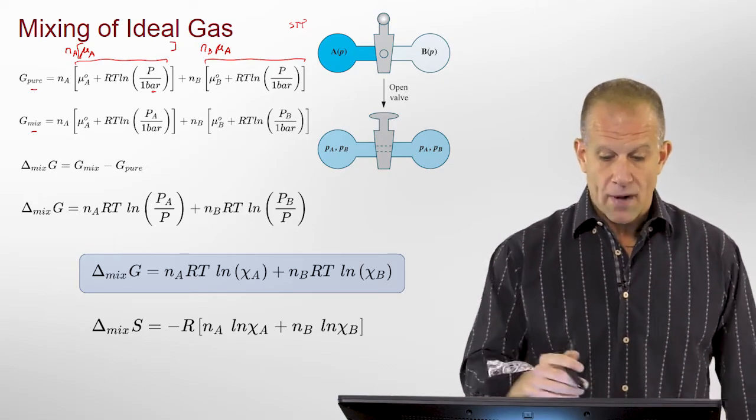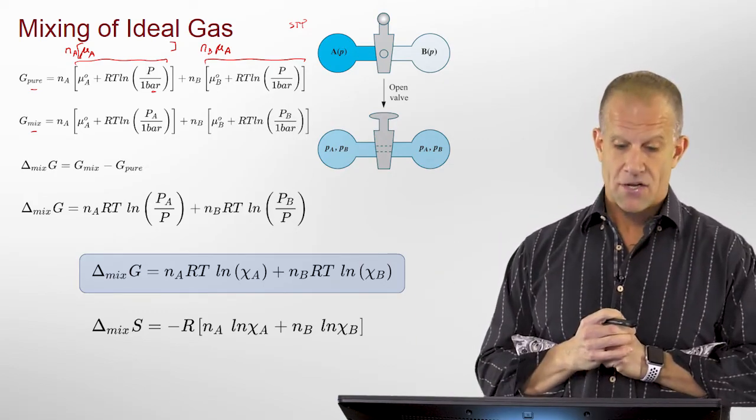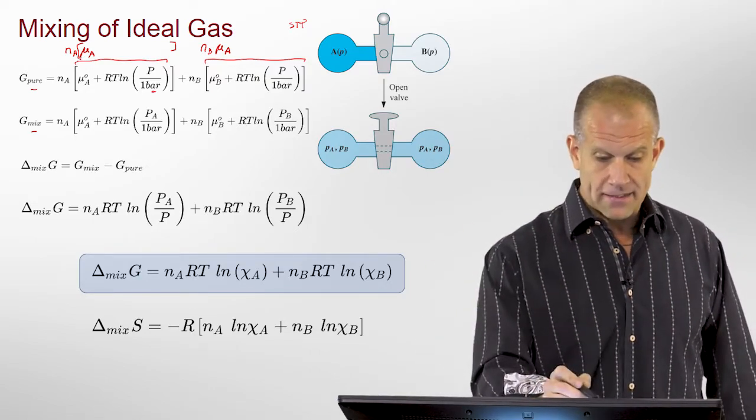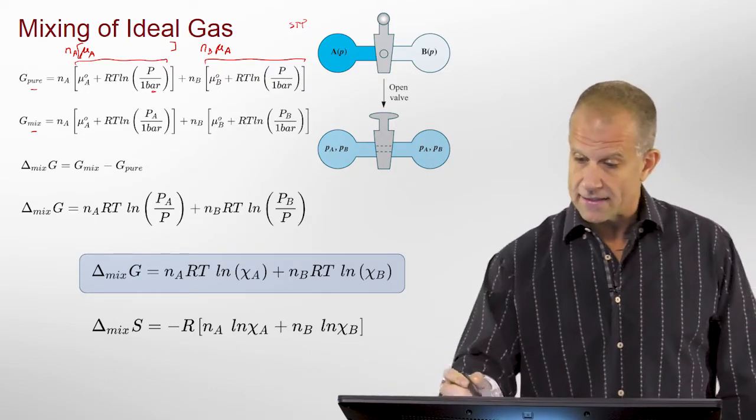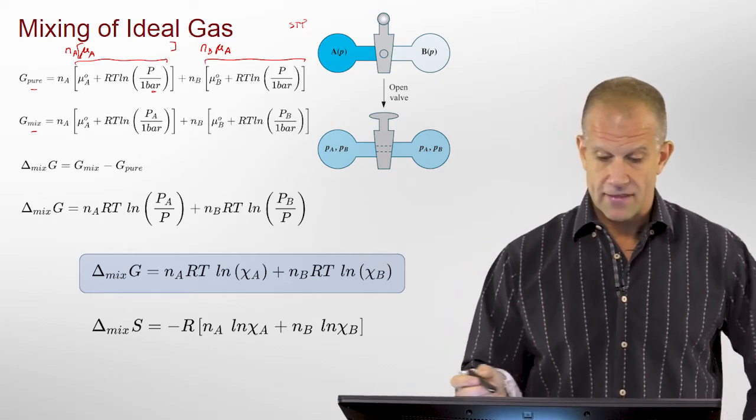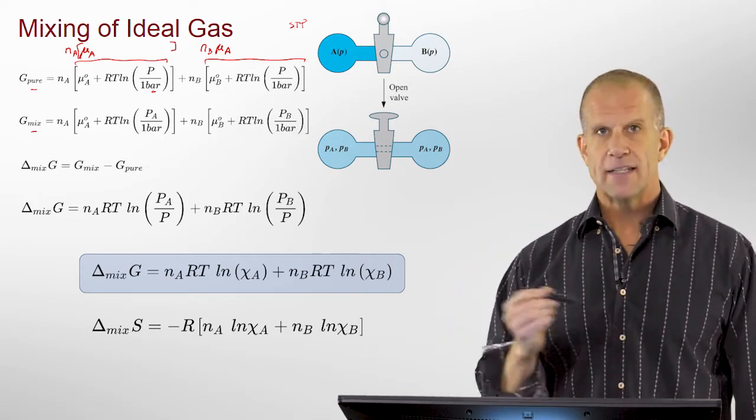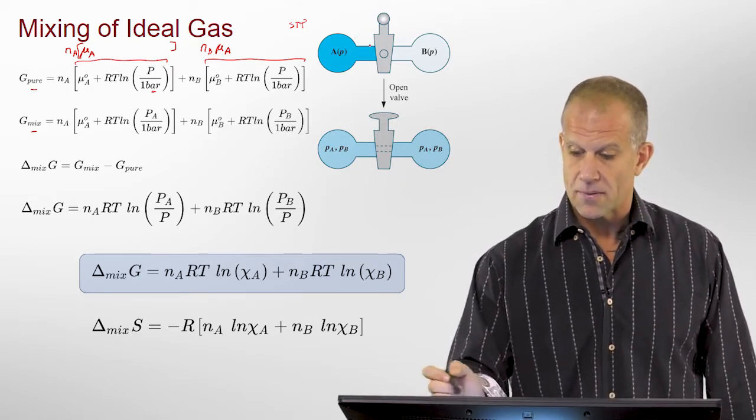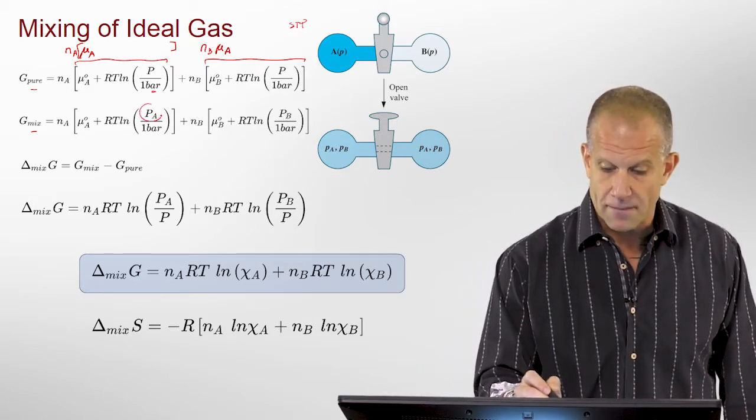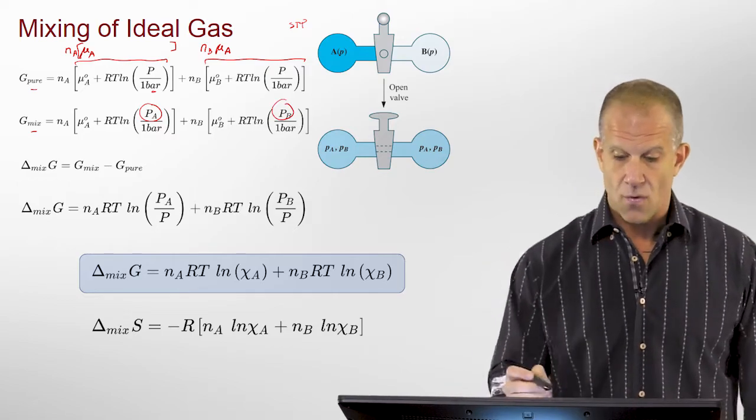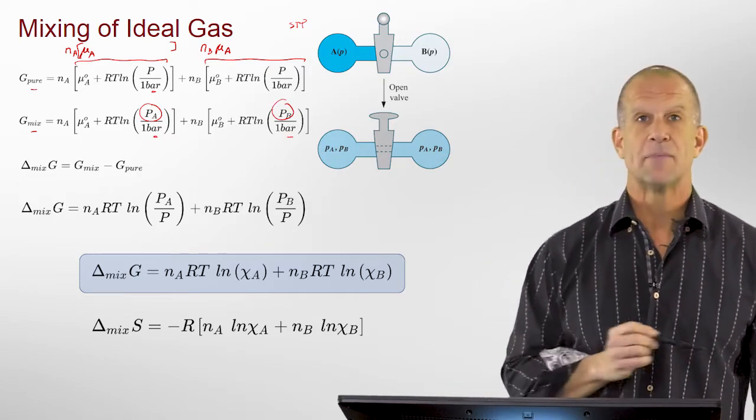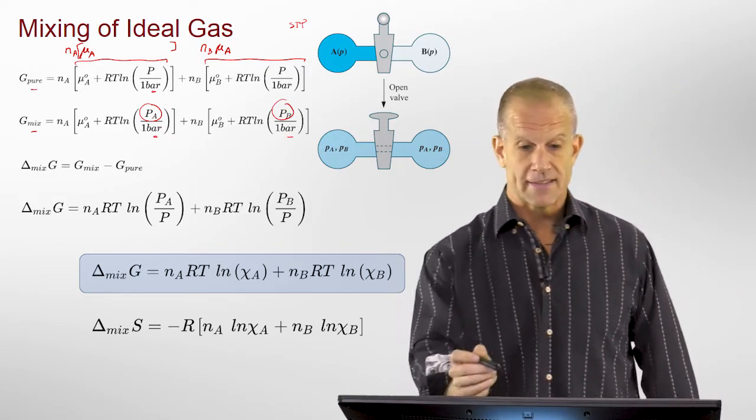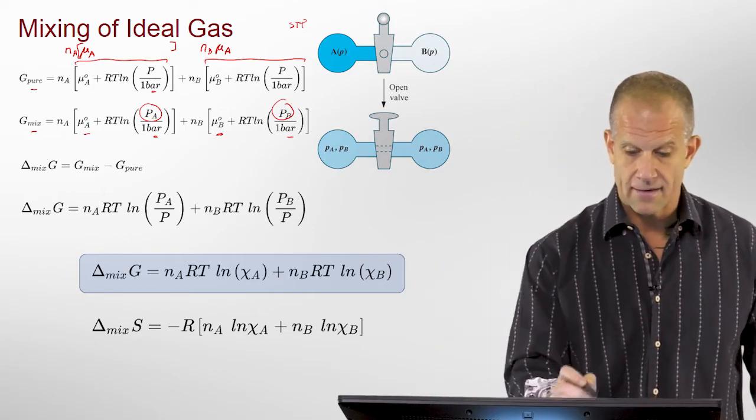So now we would write the same expression for the mixed state, expressing each one of these individually, except now it's mixed, so now it's not the total pressure of each of those individual ones, it's the partial pressure of each one, still to the same standard, to the same standard state here and here.